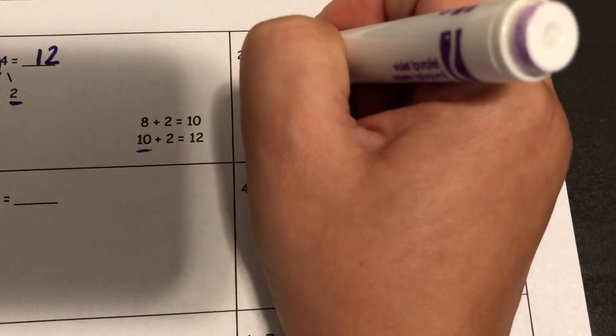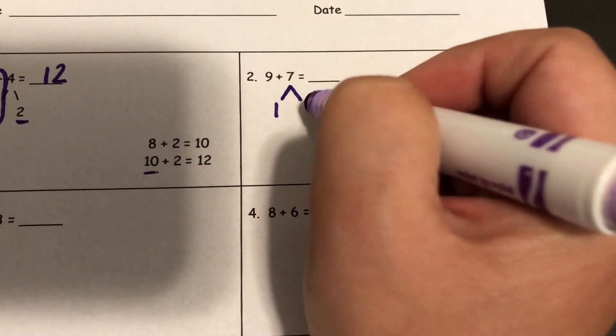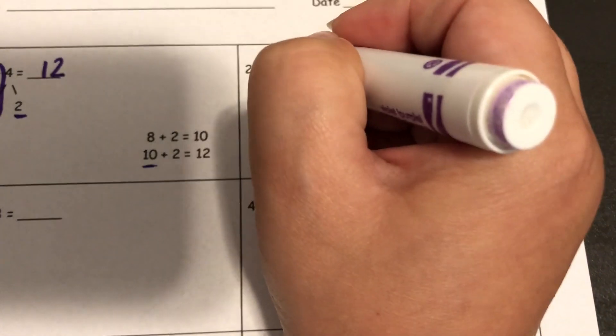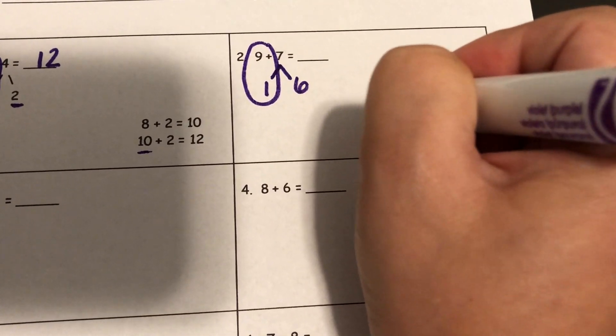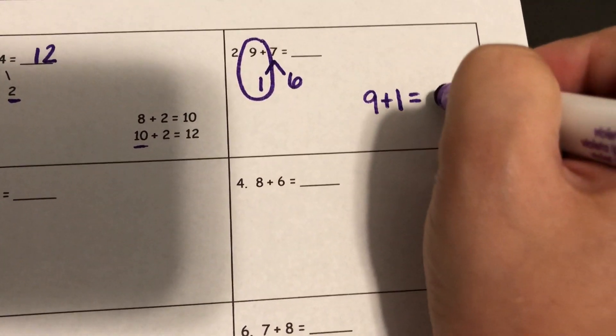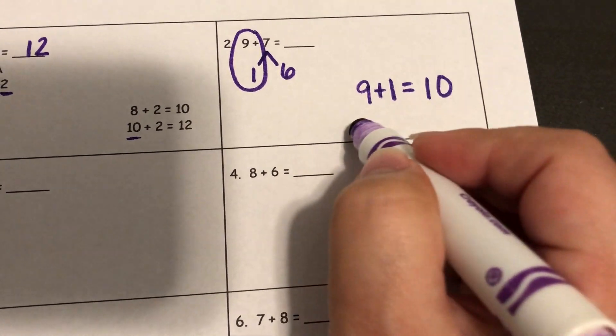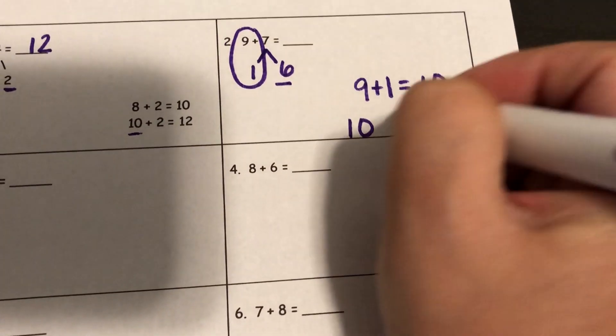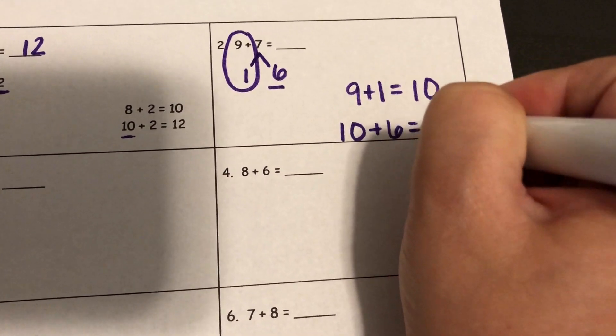So I go over to my 7 and I pull out 1, which means I have 6 left in the number 7. 9 plus 1 equals 10, and now all I need to do is take that 10 and add back in the 6. 10 plus 6 gives us a 16.